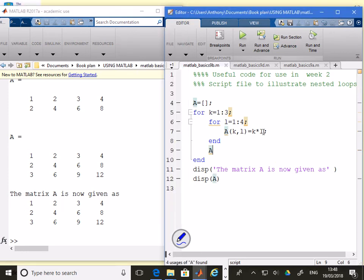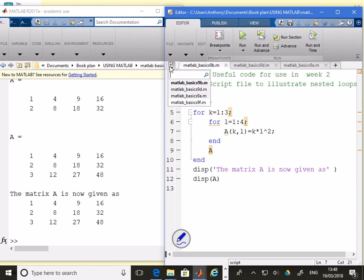I could change this operation. I've got k times l. I could make it k times l squared and run it. Now you see we get different values in the matrix A.